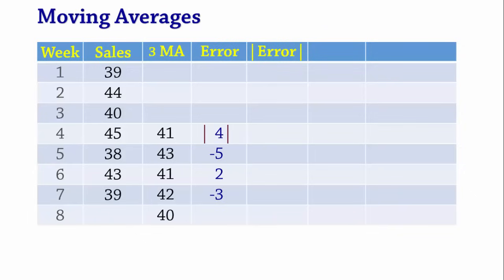So, the absolute value of 4 is 4. The absolute value of negative 5 is 5. For 2, it is 2. And for negative 3, it is 3. To find the mean absolute deviation, MAD or MAE, we simply average these absolute errors.